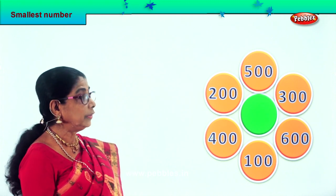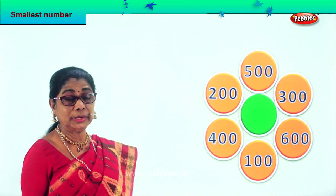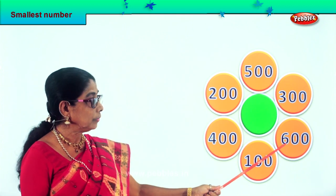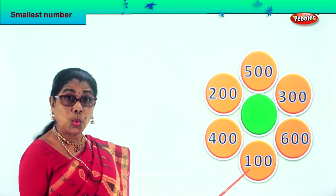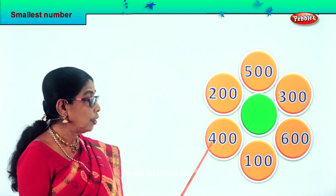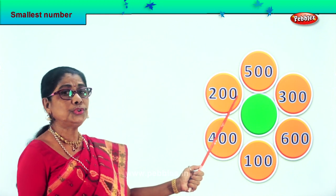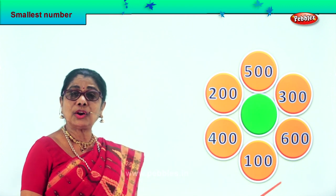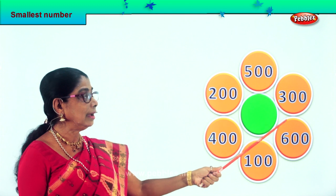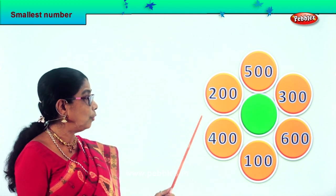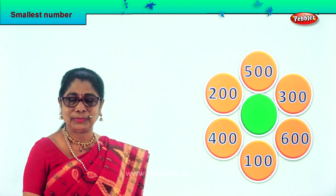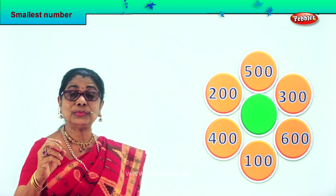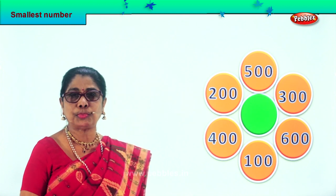Let's take another sum. First, let's read aloud. What numbers do we have? Three hundred, six hundred, one hundred, four hundred, two hundred, and five hundred. Here, they are all in hundreds — five hundred, three hundred, six hundred, one hundred, four hundred, two hundred. All in hundreds. All we need to look at is the number in the hundreds place — which is the smallest number, and that's your smallest number.